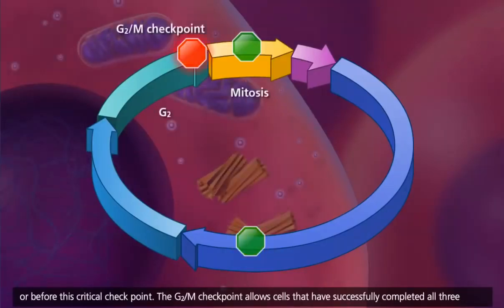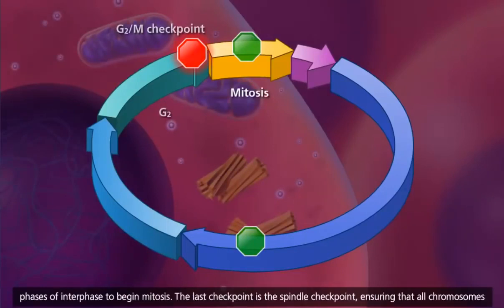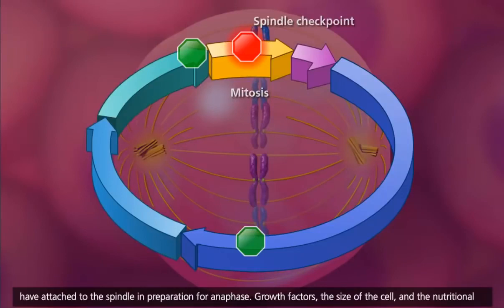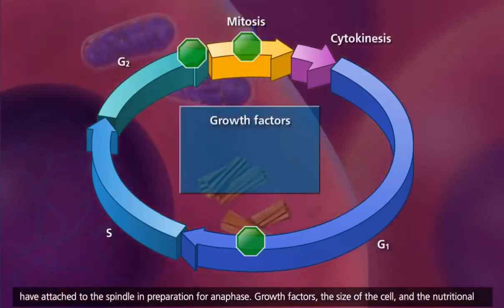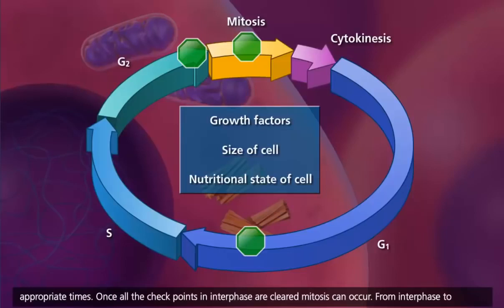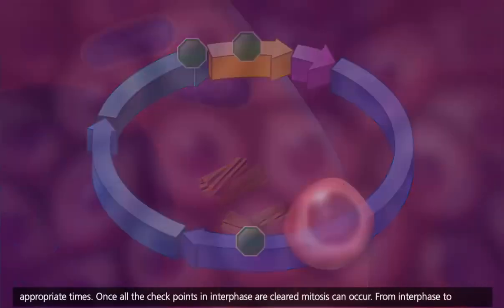The G2/M checkpoint allows cells that have successfully completed all three phases of interphase to begin mitosis. The last checkpoint is the spindle checkpoint, ensuring that all chromosomes have attached to the spindle in preparation for anaphase. Growth factors, the size of the cell, and the nutritional state of the cell are all contributing factors in cell cycle regulation, ensuring that only certain cells divide at appropriate times. Once all the checkpoints in interphase are cleared, mitosis can occur.